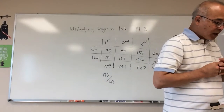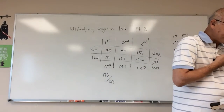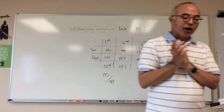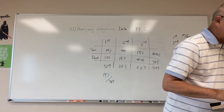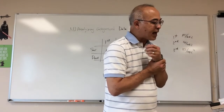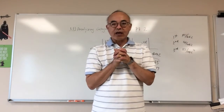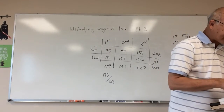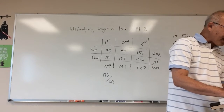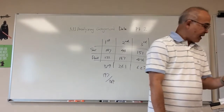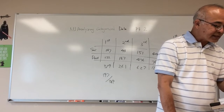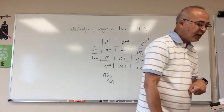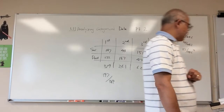Now let's say we're going to make a bar chart. On page 19 there is a side-by-side bar graph and a segmented bar graph. In the book they go back to the snowmobile example from last lecture, and it gives you both a side-by-side bar graph and a segmented bar graph, all in relative frequencies and percents.